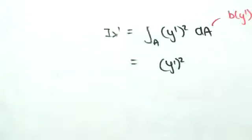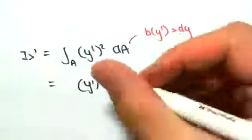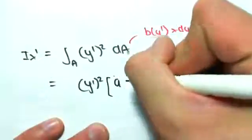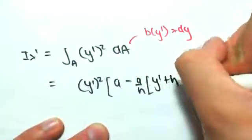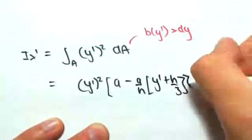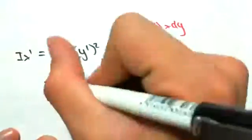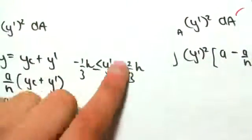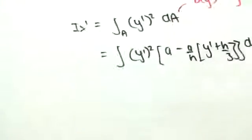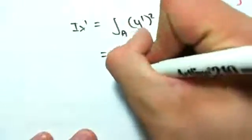So that essentially is the area of that strip where b(y dash) we found here. So we're going to sub that in. So that's outside of a minus a on h, outside of y dash plus h on 3, and this is outside of dy. And the integral now, as I said, the domain is between this domain here. So it looks a bit uglier, but it's minus 1/3 h, 2/3 h.